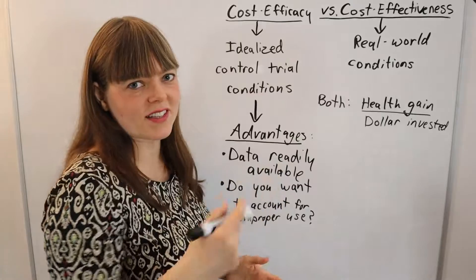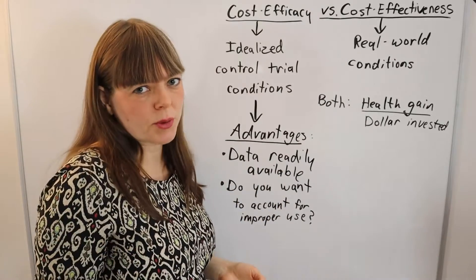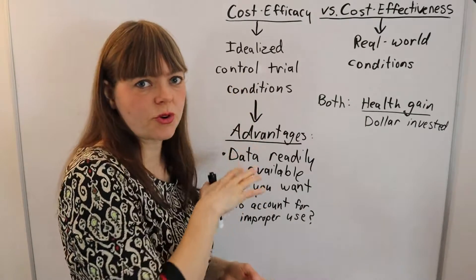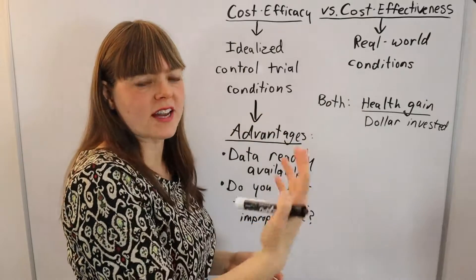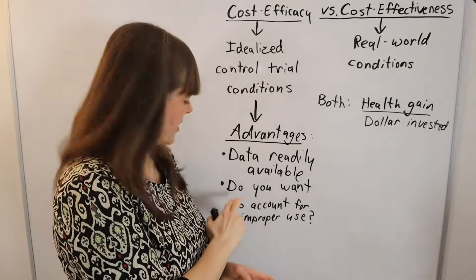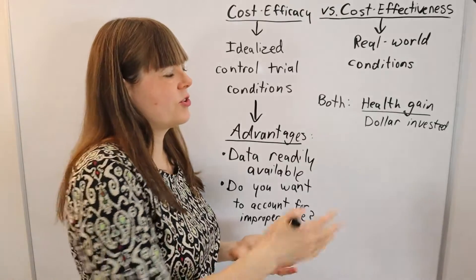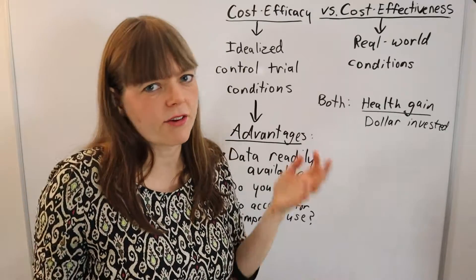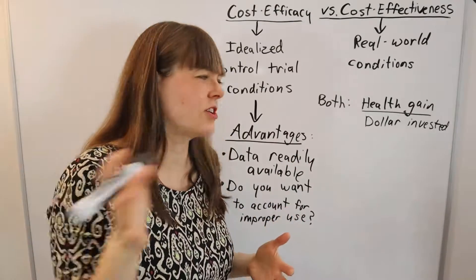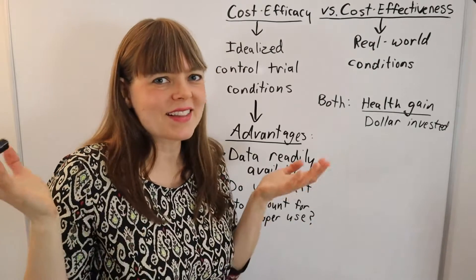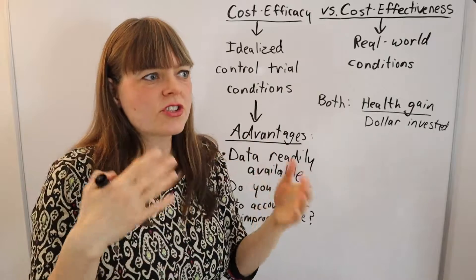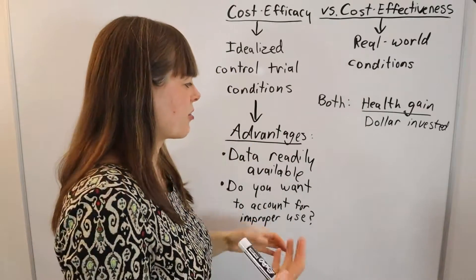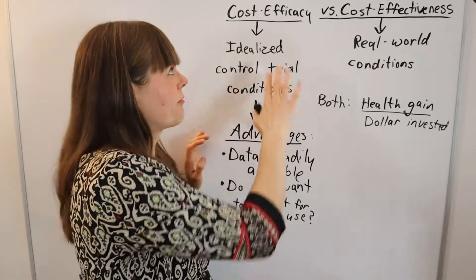One advantage of cost efficacy is that the data is actually available — you have clear-cut data from the control trial to calculate a cost efficacy measure. Also, would you really want to use a measure where people are taking the drug improperly, like forgetting to take it every other day or taking it at night instead of the morning? You could simply tell the patient to take it correctly if you discover they're doing it wrong. So there are good reasons to prefer cost efficacy.